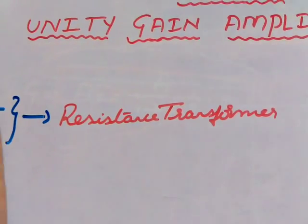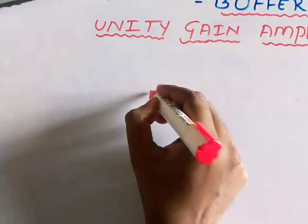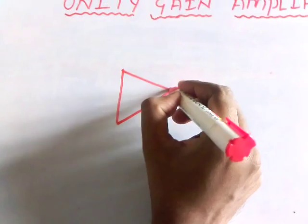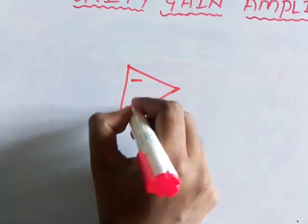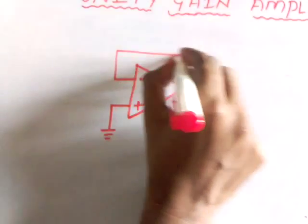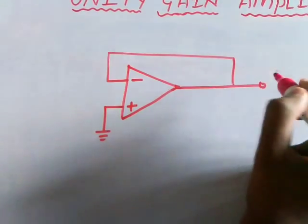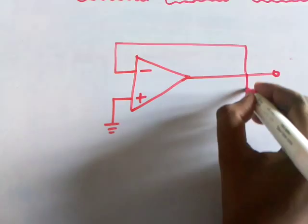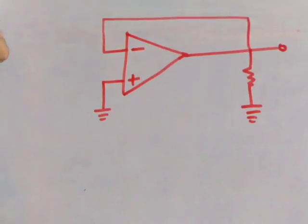Now let us consider the schematic diagram of this device. Generally, this voltage buffer is constructed by using a well-known mathematical operator or electronic device called op-amp. As you know, this operational amplifier is used in various applications, like constructing a differentiator, integrator. And this is a well-known practical use that is called voltage buffer.